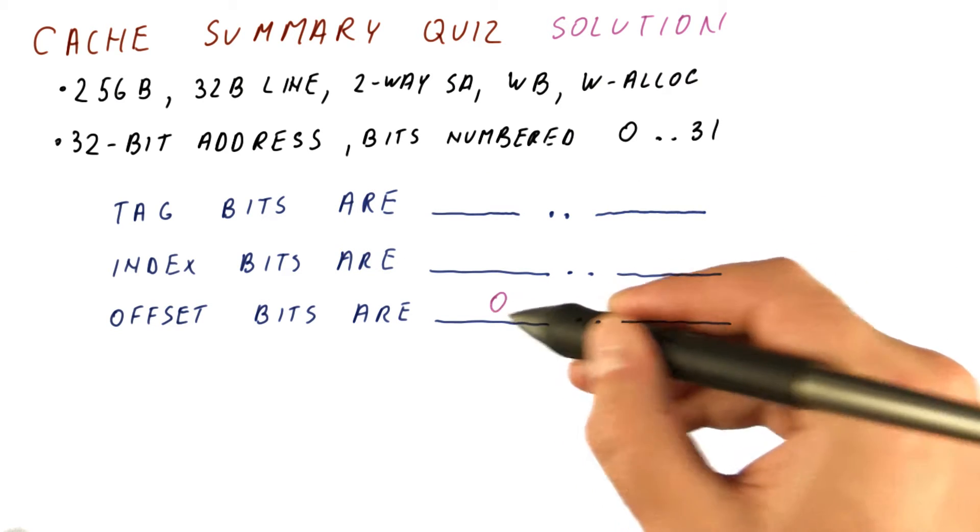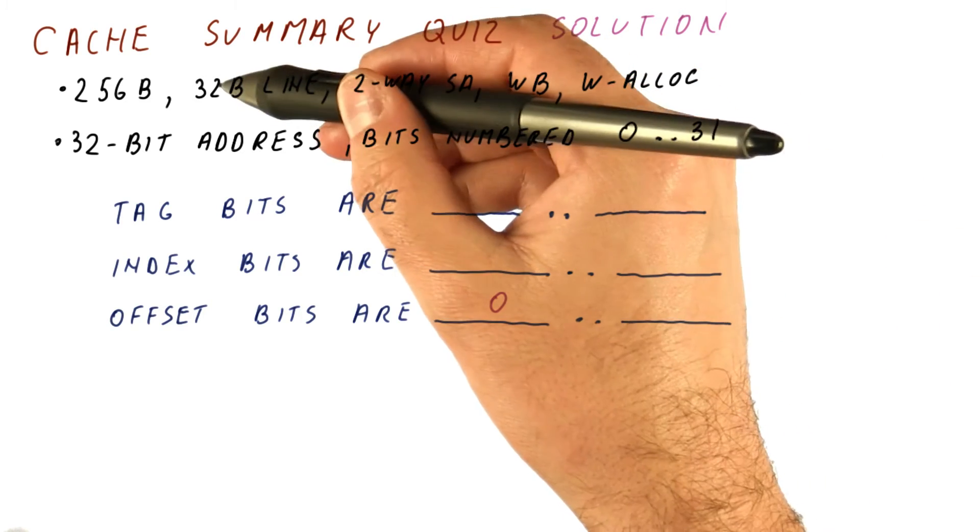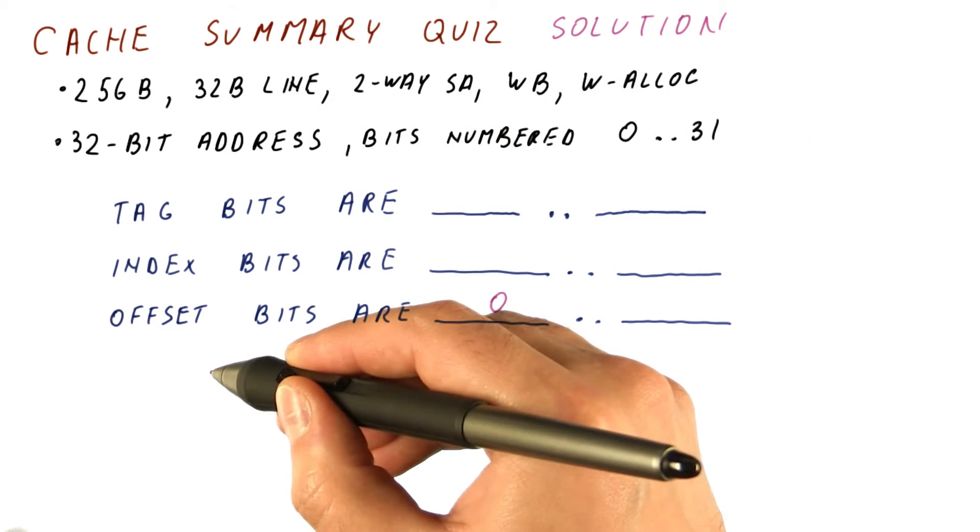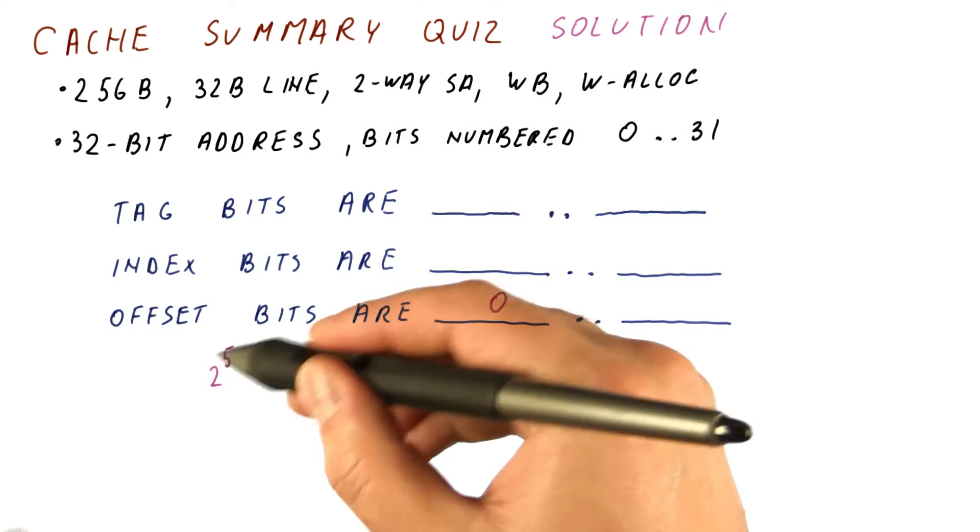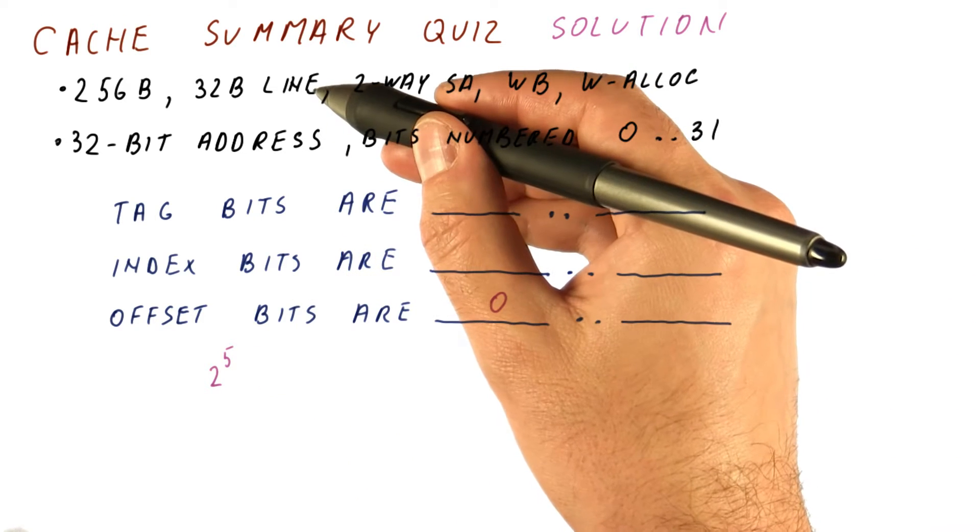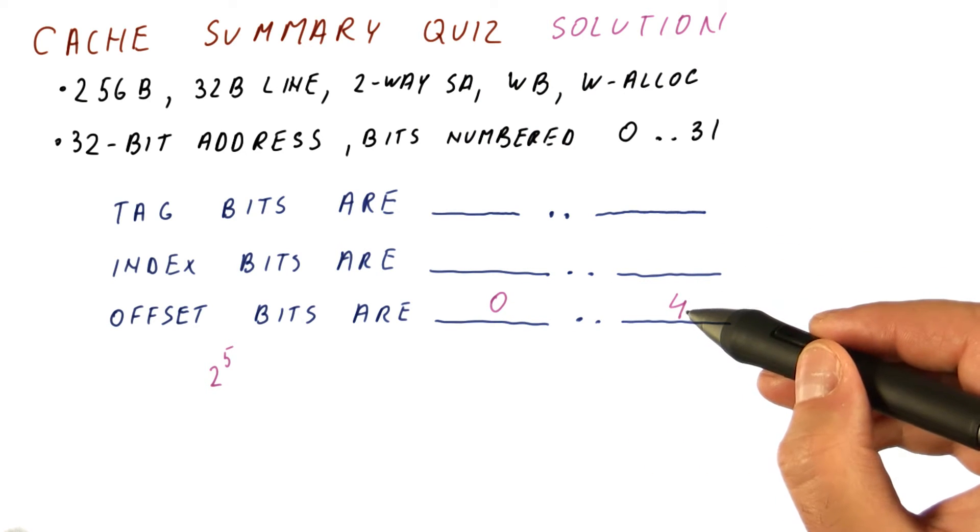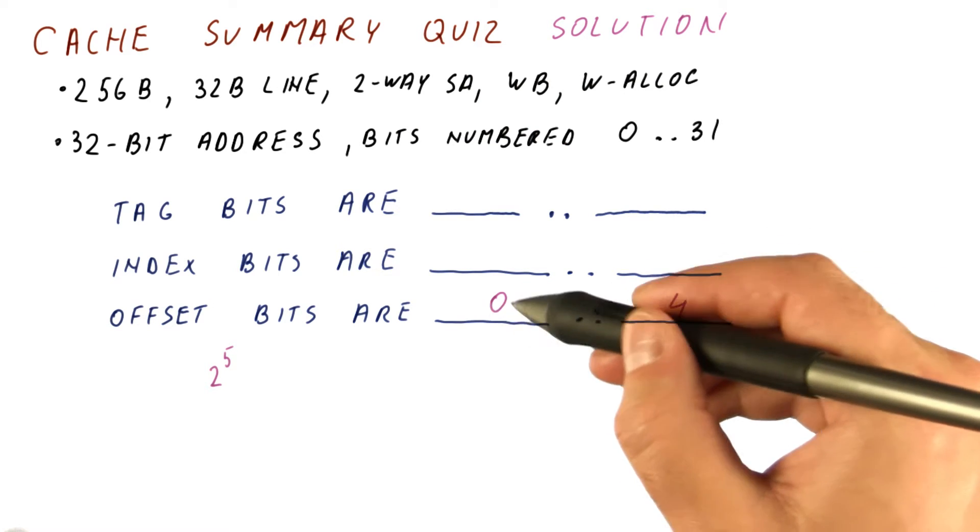Bits zero through something are the offset. Which bit? Well, 32 bytes is two to the fifth bytes. So we need five bits to tell us which byte we have in a line. That means that we're talking about bits zero through four. This is five bits because we begin at zero.